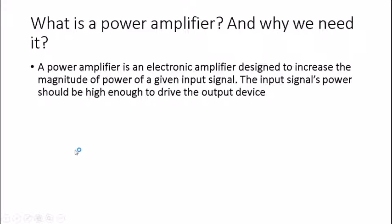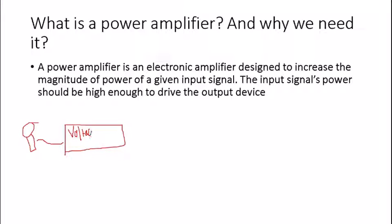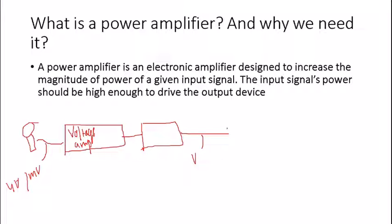I'd like to demonstrate why we need a power amplifier by drawing a simplified block diagram of an audio playback process. We have a mic whose signal goes into a voltage amplifier — single stage or multi-stage — where the signal goes from millivolts or microvolts up to volts. The power amplifier is then the final stage after that voltage amplifier.